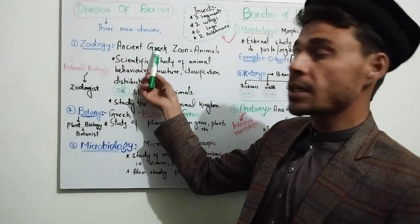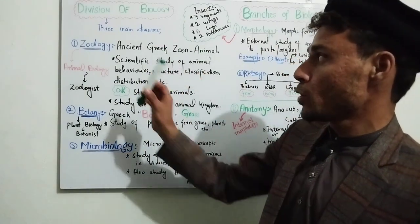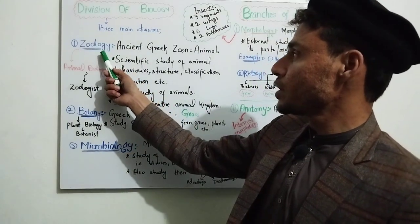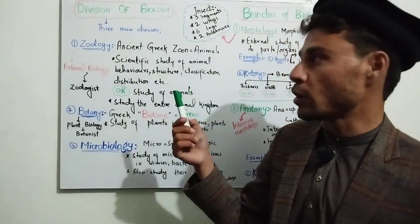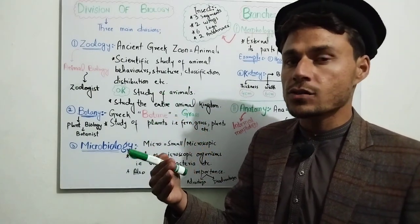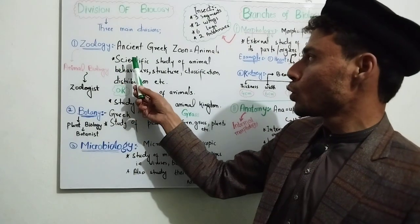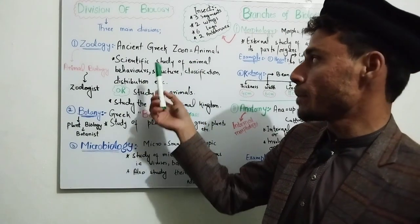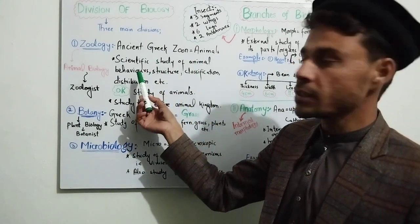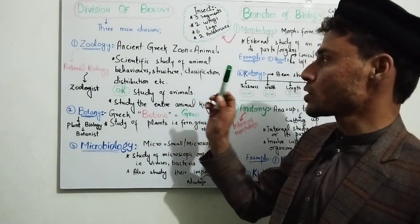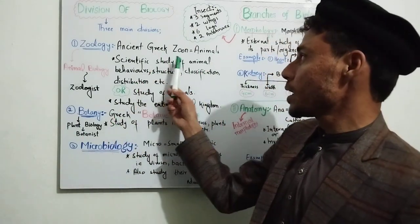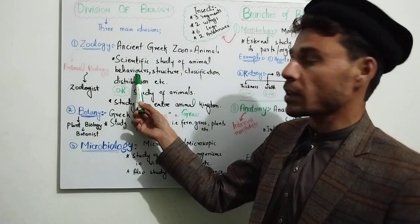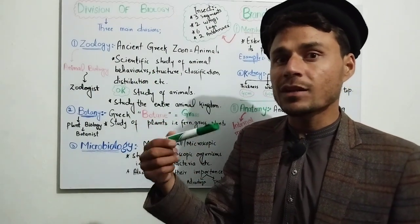Zoology comes from the ancient Greek word for animals. The definition of zoology is the scientific study of animal behavior, structure, classification, and distribution. The study of animals — their behavior, structure, and classification — is called zoology. Animal behavior is a basis of zoology.